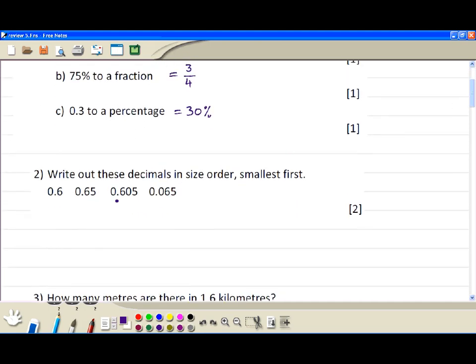Number two. First we change it to percentages, so times each number by 100. So this is 60%, this one is 65%, this is 60.5%, and this is just 6.5%. So this is the smallest one, then the second one, third, and fourth. Now you write the original numbers: 0.065, 0.6, 0.605.